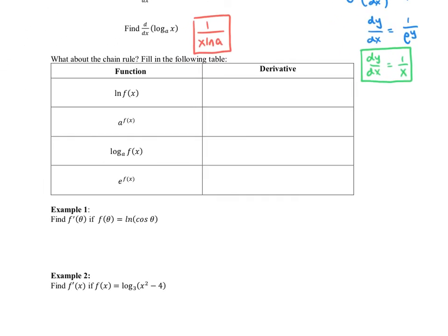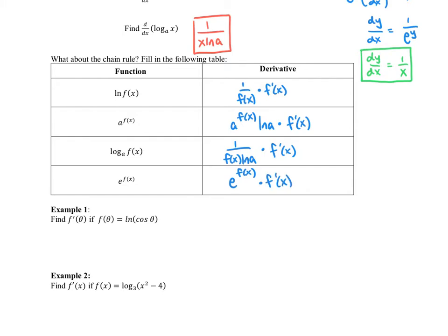As a quick review of these four formulas: the derivative of ln(f(x)) is 1/f(x) times f'(x) by the chain rule. For a^(f(x)), it's a^(f(x)) · ln(a) · f'(x). Log base a of f(x) is 1/(f(x)·ln(a)) · f'(x). And e^(f(x)) · f'(x), which we've also discussed many times.